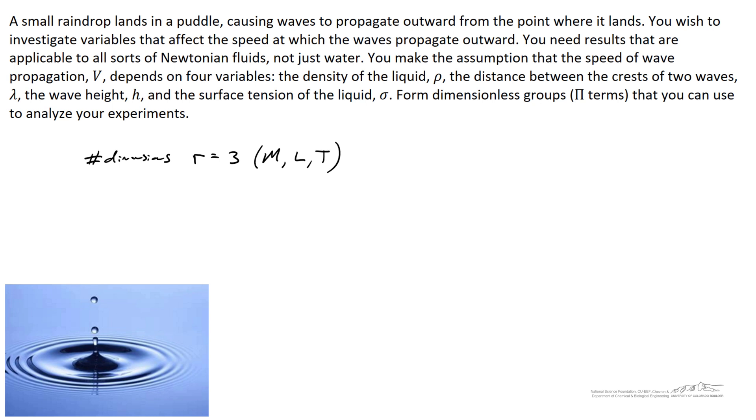And a common question that's asked is, what should I choose as the repeating variables? And the short answer is, it doesn't matter. You're going to come up with pi terms. If you do this correctly, you're going to come up with pi terms no matter what. It'll be different pi terms, but as we'll see in the end, you can rearrange them to come up with the pi terms you would have arrived at had you chosen other repeating variables.